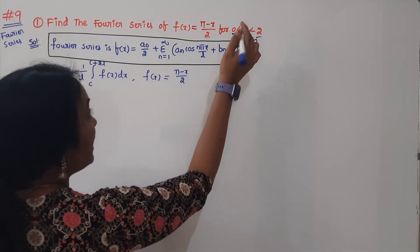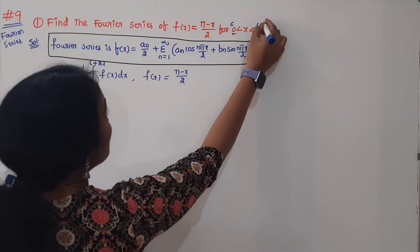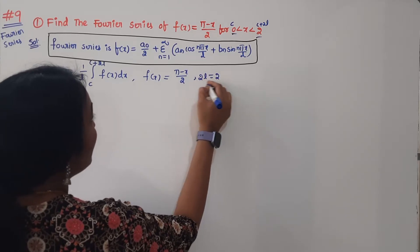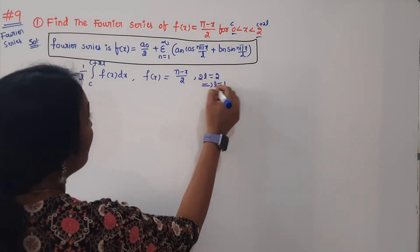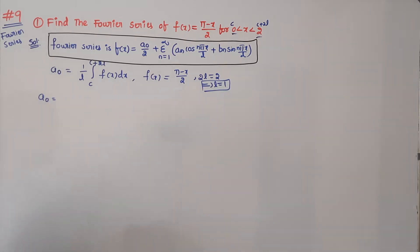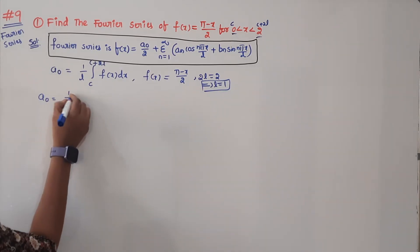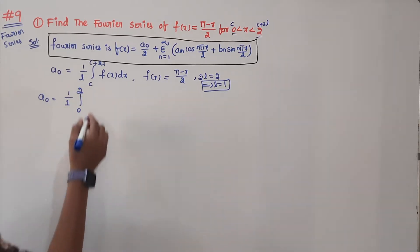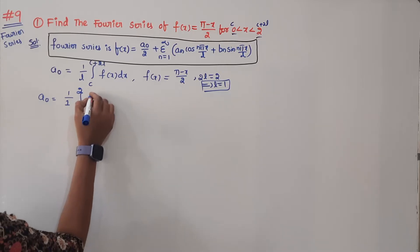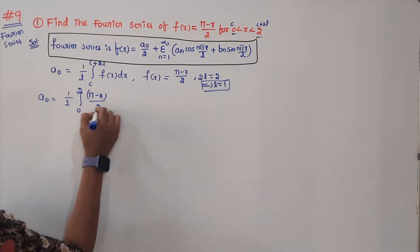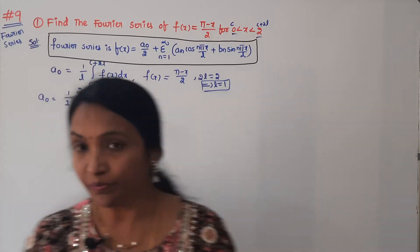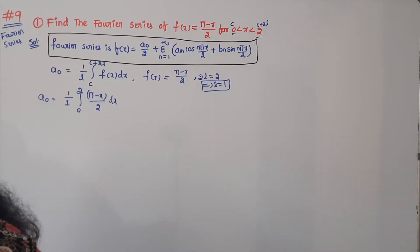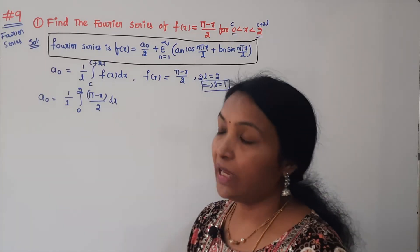The interval is c to c + 2L. With c = 0 and 2L = 2, we get L = 1. The A0 formula is A0 = (1/L) × integral from c to c+2L of f(x) dx. Substituting L = 1 gives us 1/1 times the integral from 0 to 2 of f(x) dx, where f(x) = (π - x)/2.